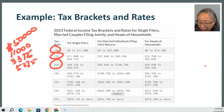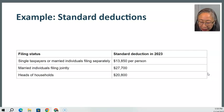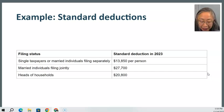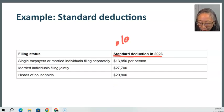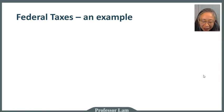The standard deduction also depends on filing status. For 2023: a single individual gets $13,850; married filing jointly gets $27,700; head of household gets $20,800, since they have more expenses. Note that the standard deduction is also higher if you are older or blind. Look up the actual amount each tax year.